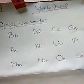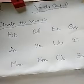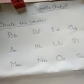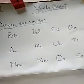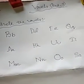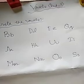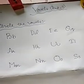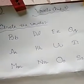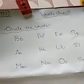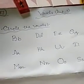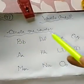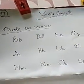We know that A, E, I, O, U — these five are vowels. The rest are consonants. In this class, what you have to do is just circle the vowels.